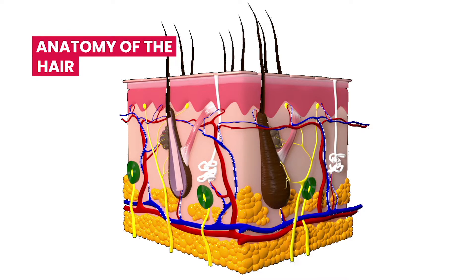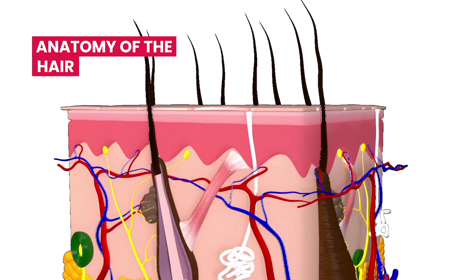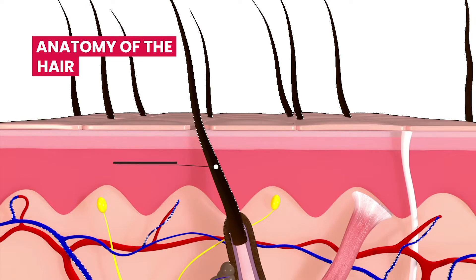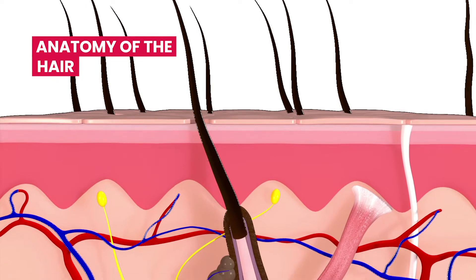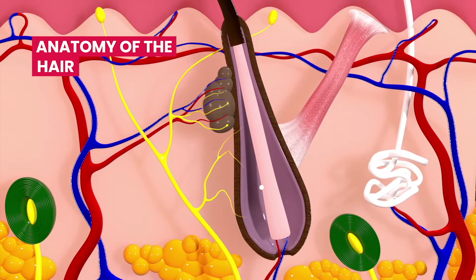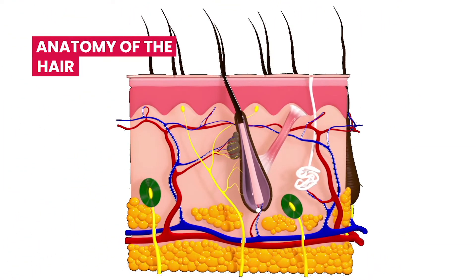The hair is comprised of three different areas. The shaft is the portion of the hair that lies above the skin surface but also runs through the center of the hair. The root lies underneath the skin inside the follicle. The bulb is the large base at the bottom of the root, and this encases the dermal papilla.